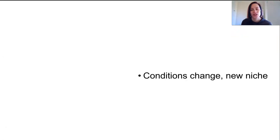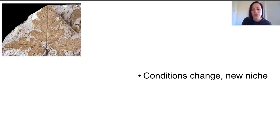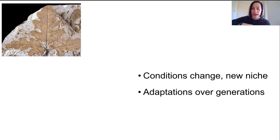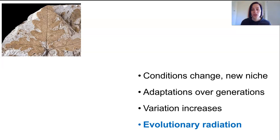When conditions change, opportunities arise to fill a new ecological niche. Some populations will undergo adaptations over generations and speciation will occur, resulting in the increased variation of life on Earth. This speciation contributes to evolutionary radiation.